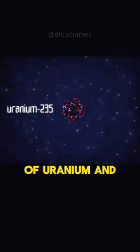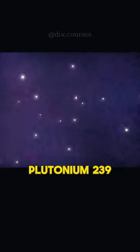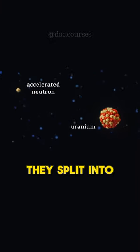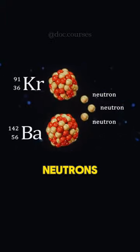In certain isotopes of uranium and plutonium, like U-235 and plutonium-239, when they are bombarded by a neutron, they split into two lighter nuclei, releasing three additional neutrons.